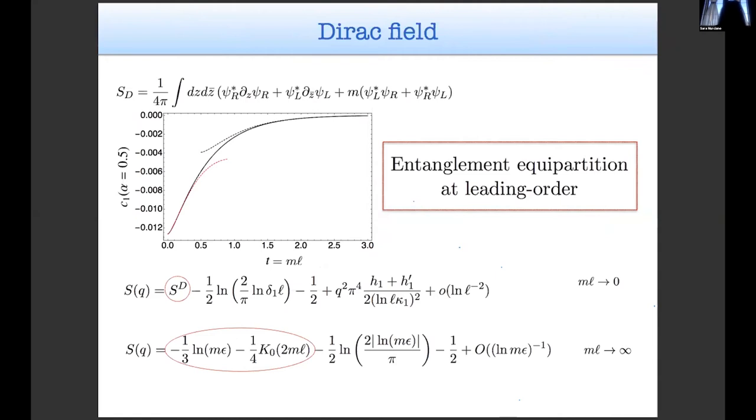A massive Dirac field theory described by this action. We computed the c function, then we used the analytical expression for the c function in the small and large mass limits in order to obtain through Fourier transform the final expression for the symmetry resolved entropies. We can see that in both cases, so small and large mass limits, the entanglement entropy satisfies the equipartition at leading order. This means that this term and these first two terms are basically the results for the massless and massive entanglement, and the corrections which explicitly depend on the charge sector are sub-leading with respect to these ones.